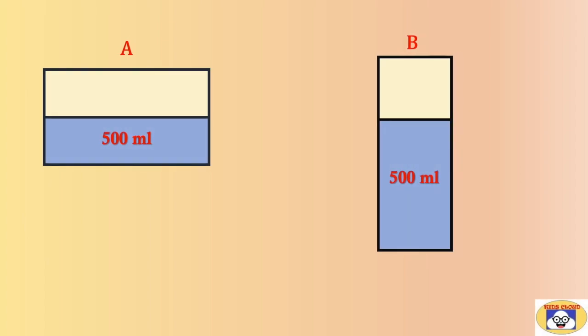Here is one more example. Let's assume there are two containers A and B. Each is filled with 500 ml of water. Does it mean the capacity of A and B is 500 ml? The answer is no. You can see still some space is there in both the containers.